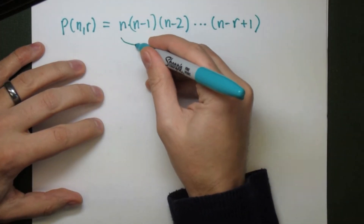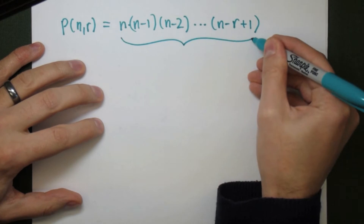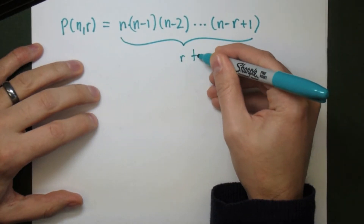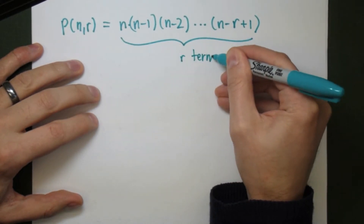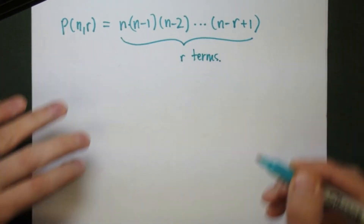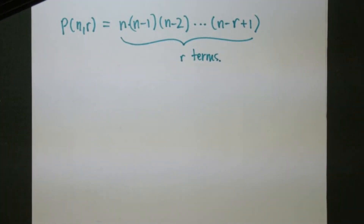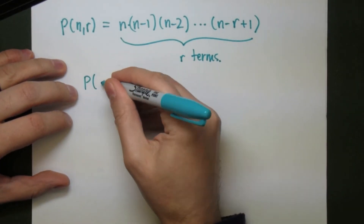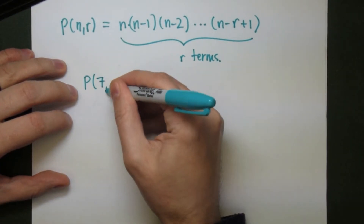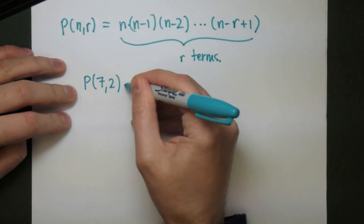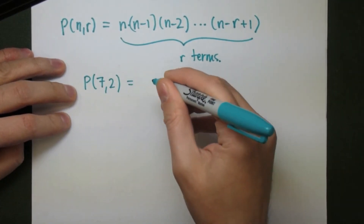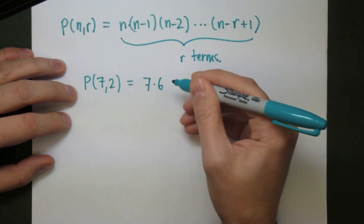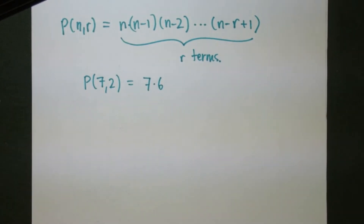This looks like a complicated formula, but really all you're doing is multiplying down and you take r terms. So as an example, let's take a look at P(7,2). This will be two terms starting at 7, so 7 times 6, or 42.